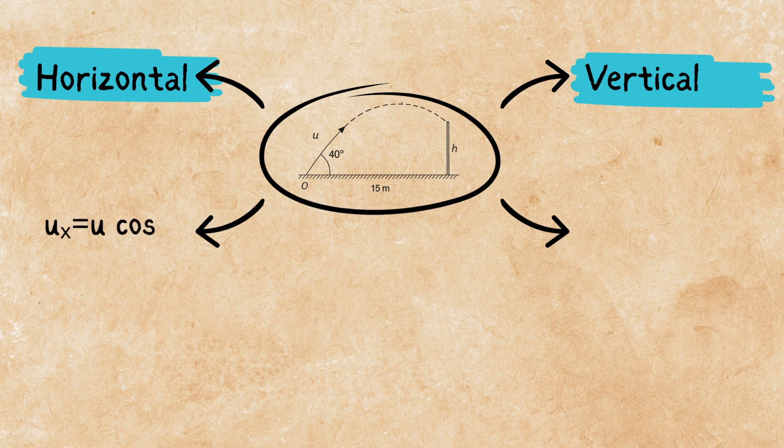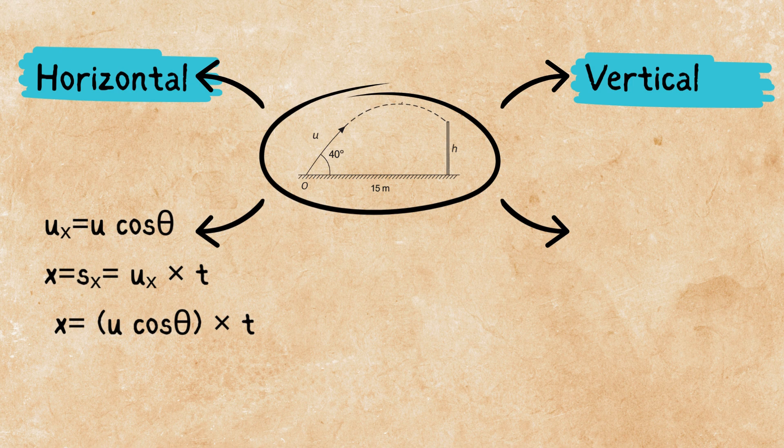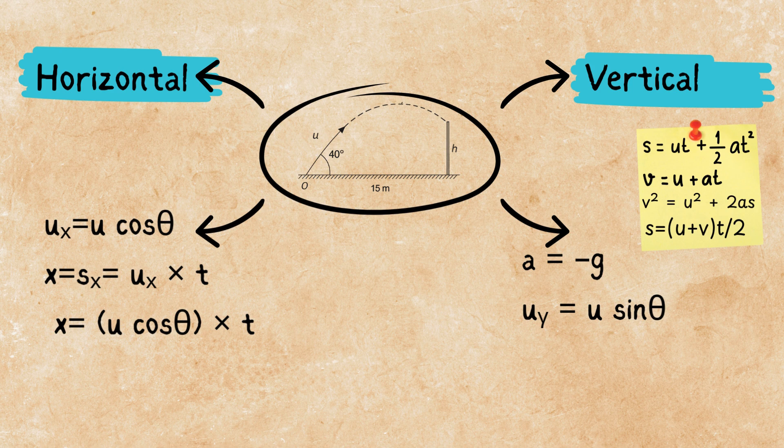It's a projectile question. That means we are dealing with horizontal motion and vertical motion. In horizontal direction, we don't have any force. So, it's a constant velocity. We can have the initial velocity component, U cosine theta, and the simple formula of X equals Ux times T. But in vertical direction, the story is different. We have acceleration. So, we are using the equations of motion. And we have the initial velocity of Uy, which is U sine theta. We're going to use this information for these questions.